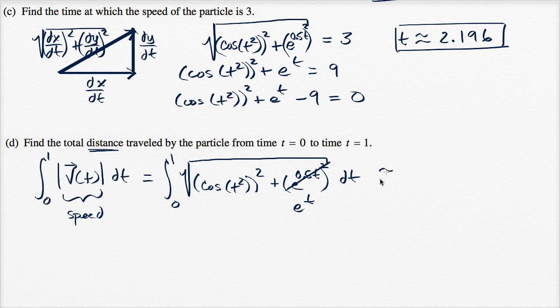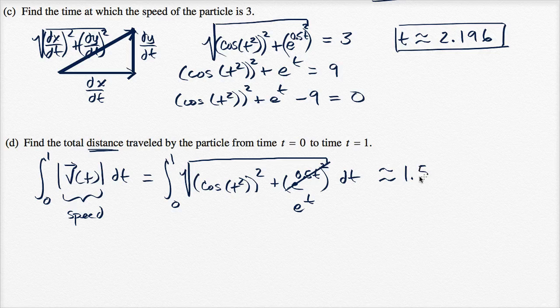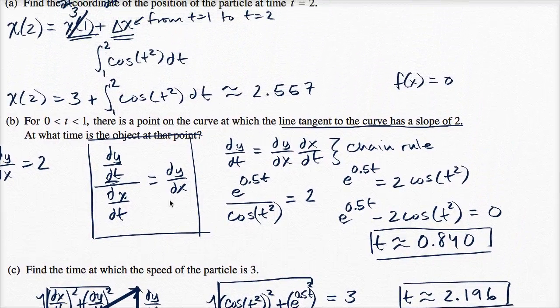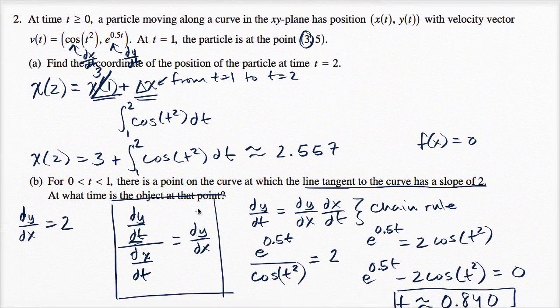So this is approximately 1.595, the total distance traveled by the particle, time equals 0 to t equals 1, which is kind of neat that we can do these things, just from the information that they gave us at the beginning of the problem.